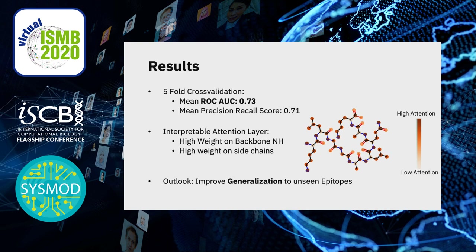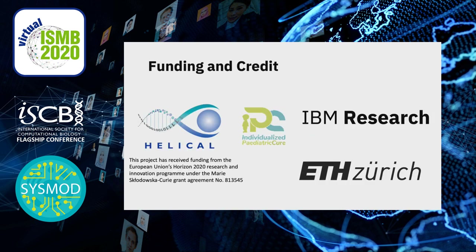As an outlook, we want to improve generalization also to unseen epitopes, because right now the model is mostly good at generalizing to unseen T cell receptors. With this, I want to thank IBM Research and ETH Zurich for supervising my PhD, and Helical and IPS Network for funding, and you for your attention.